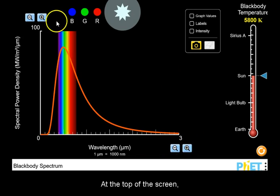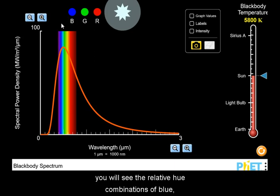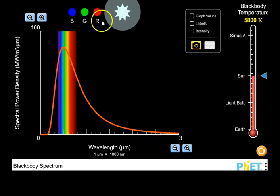At the top of the screen, you will see the relative hue combinations of blue, green, and red, and the overall visual combination of these as you change temperature.